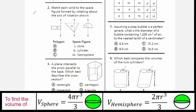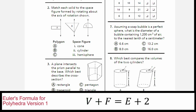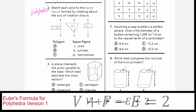This is the one where we're going to have to use our imagination. It's asking us to match each solid to the space figure formed by rotating about the axis of rotation. A space figure is just another way to say polyhedron, which means three-dimensional shape. We have to imagine if we were to spin this rectangle around the axis of rotation, what shape would it trace out?